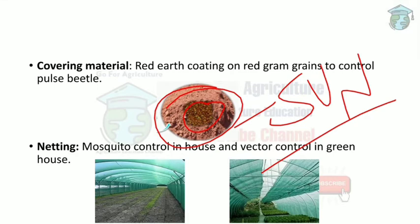Next is netting, which functions similarly to mosquito nets. Just as we sleep inside nets to protect from mosquito bites, greenhouse nets placed outside prevent the entry of pests into the plants, as seen in the picture with green nets outside and plants inside.